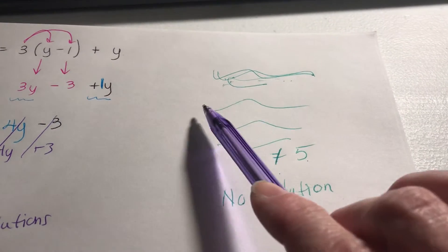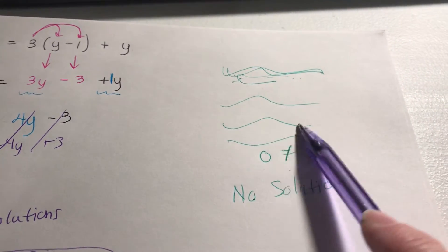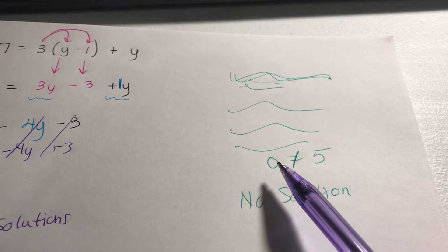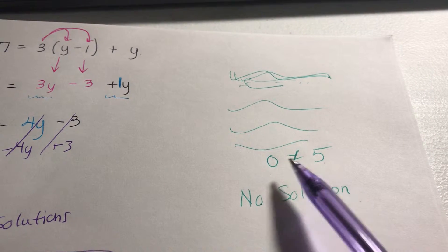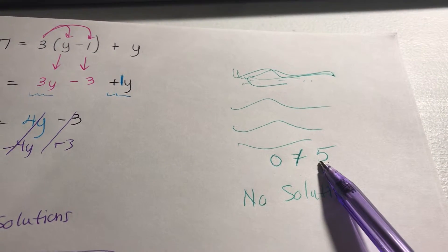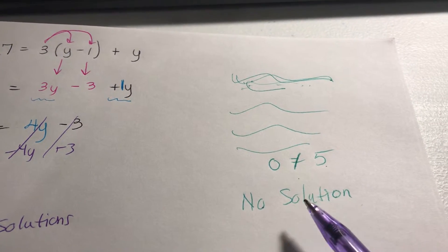I'm just picking some random number. You know you're solving the equation blah blah blah blah blah and the variables cancel out and you're left with two numbers that do not equal each other. When that happens it means there's no solution.